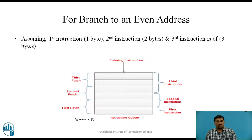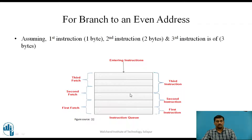The previous part covered memory access and fetching of 16-bit data. Now there is a variation whenever there is branching to an address, because whenever there is a branch, the contents of the current instruction queue are discarded or flushed out, since the branch address may or may not be present in the instruction queue.